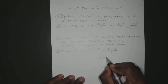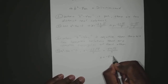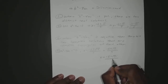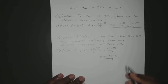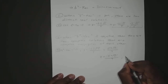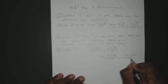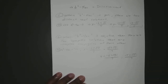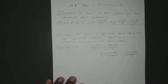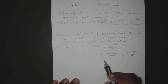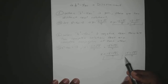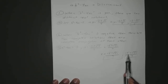So that gives us X can equal negative 5 plus square root of 13i over 7, or negative 5 minus square root of 13i over 7. So you have two complex solutions, and they are complex conjugates of each other.